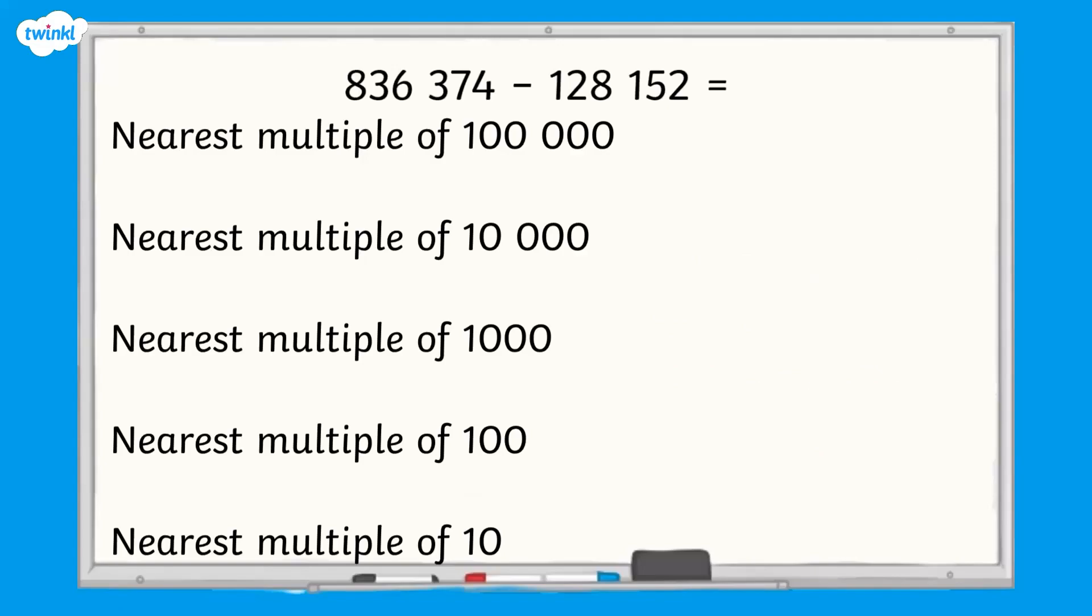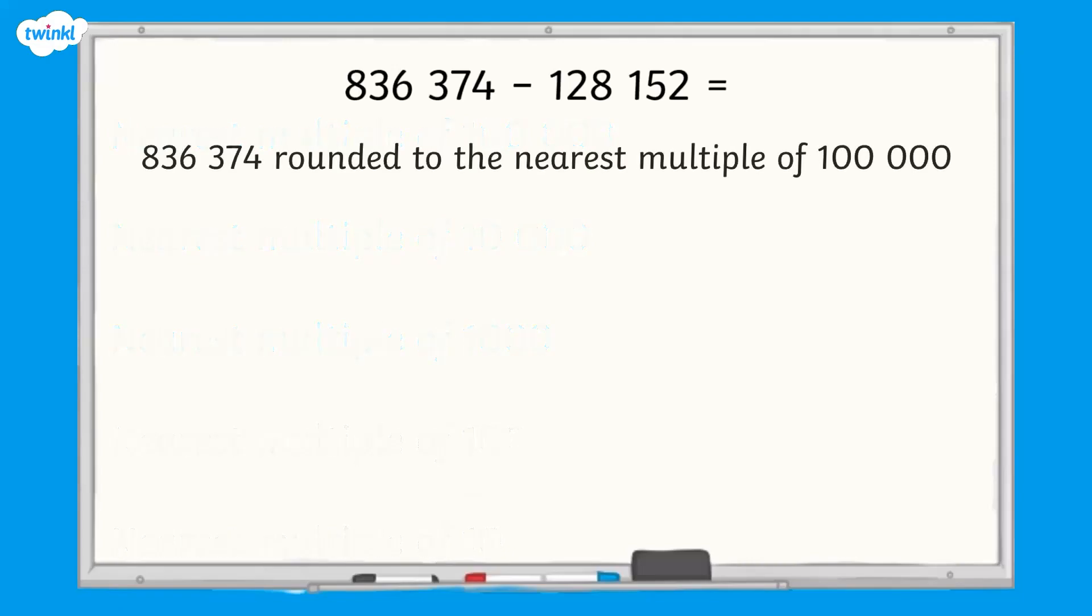So let's say we'll only round to the nearest multiples of 100,000, 10,000, or 1,000 for the six-digit numbers in this calculation. Let's start with 836,374.